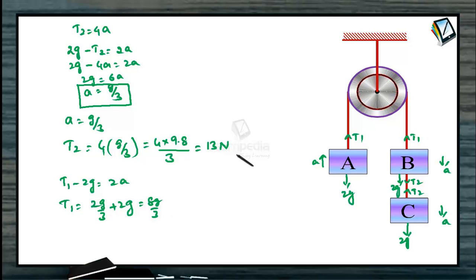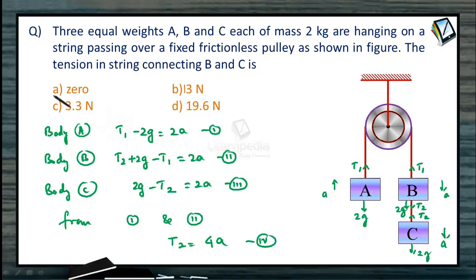Since we require in the problem the value of tension between B and C, and that is nothing but T2. So, the option will be 13 Newton.